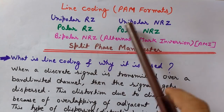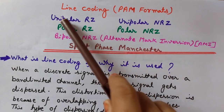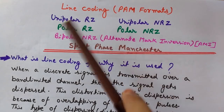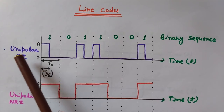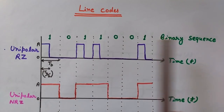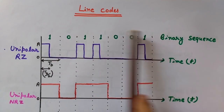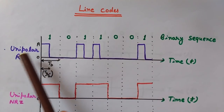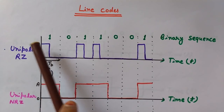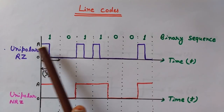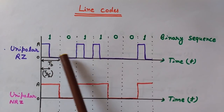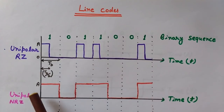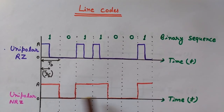Let's start with unipolar RZ — why it is called unipolar, why it is called RZ, and how to create it. We take the binary sequence 1 0 1 1 0 0 0 1 as an example. Unipolar means single pole, so we represent binary 1 by positive amplitude A and binary 0 by zero. There is no negative part — nothing below the x-axis — since it is unipolar.